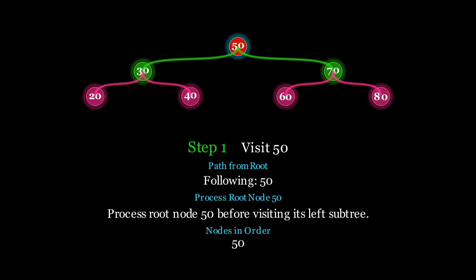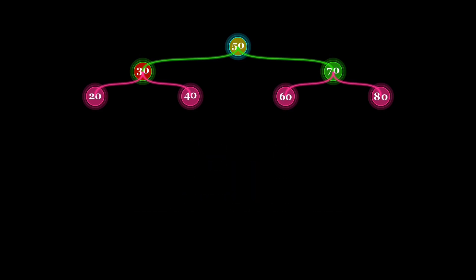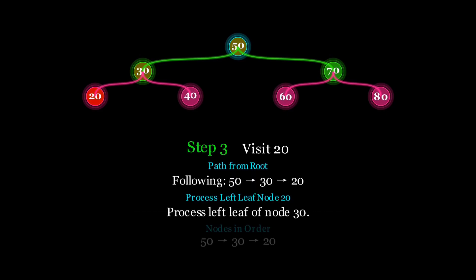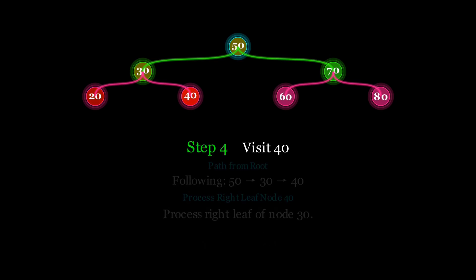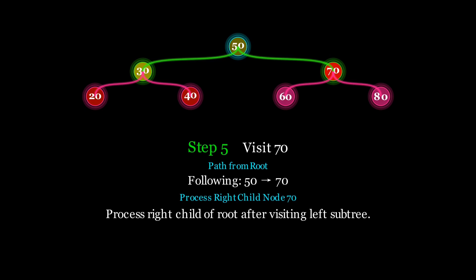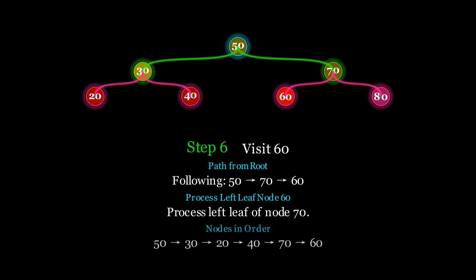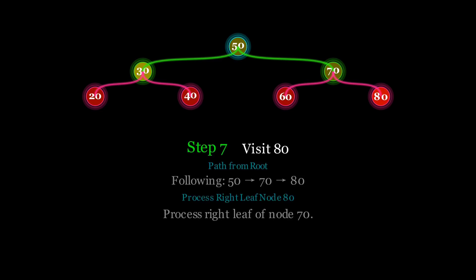Now let's visualize the pre-order traversal. We start at the root 50 and visit it first. Then we move to the left subtree, visiting left child 20. Since it has no children, we backtrack. Then we move to the right child 40. We backtrack to the root and move to the right subtree, node 70. Then we visit 60, and then the right child 80.